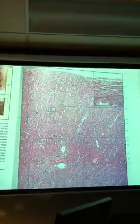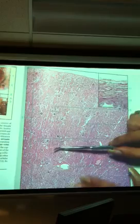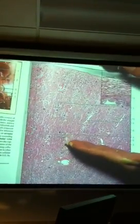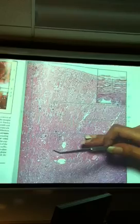This is a cross-section of a kidney. The kidney, as we said, is made up of two distinct layers: the renal cortex and the renal medulla.